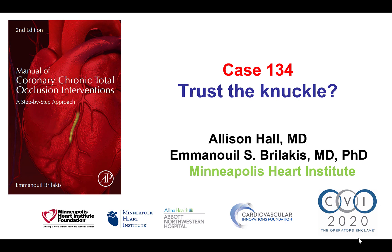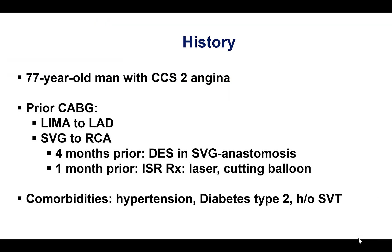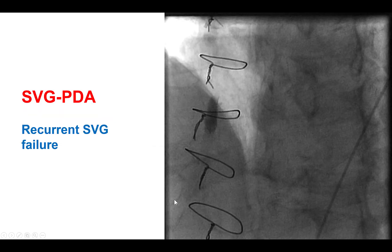This is a case in which the dictum 'trust the knuckle' is being examined. The patient had previous coronary bypass and presented with recurrent angina. He had a saphenous vein graft to the right coronary artery that had recurrent failure. Four months prior, he had a drug-eluting stent at the anastomosis, and then one month prior to the current presentation, he had in-stent restenosis requiring laser and cutting balloon. He also had hypertension and diabetes.